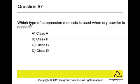Question number seven: Which type of suppression method is used when dry powder is applied? The answer is class D. Class D fires are combustible metals such as magnesium and titanium fires. These types of fires are suppressed by applying dry powder. Don't try to use water on combustible metal because it would make the fire worse.